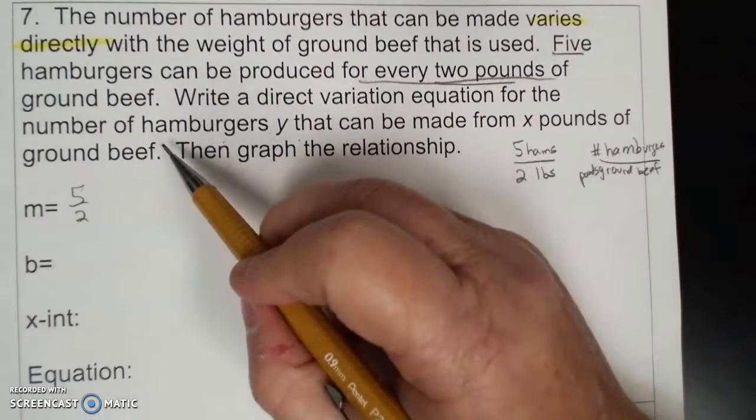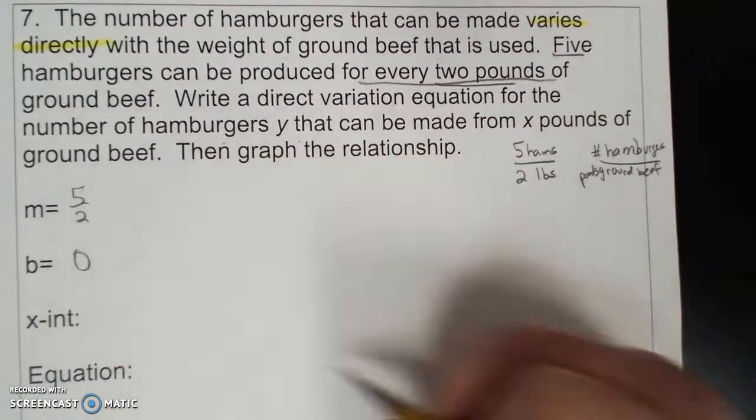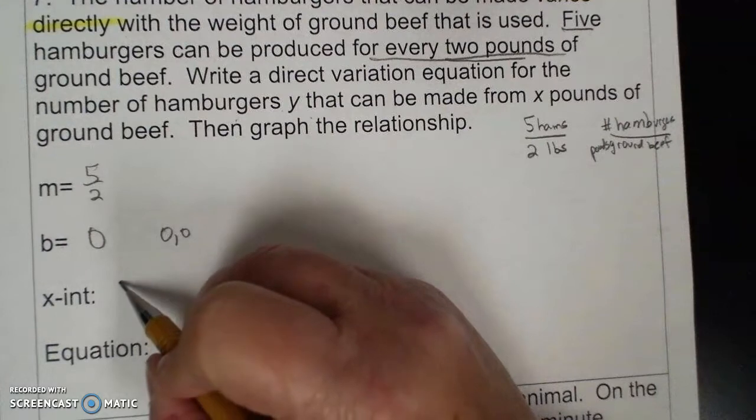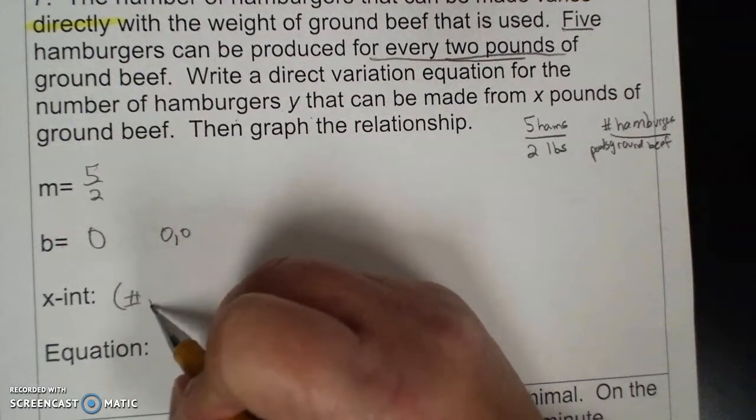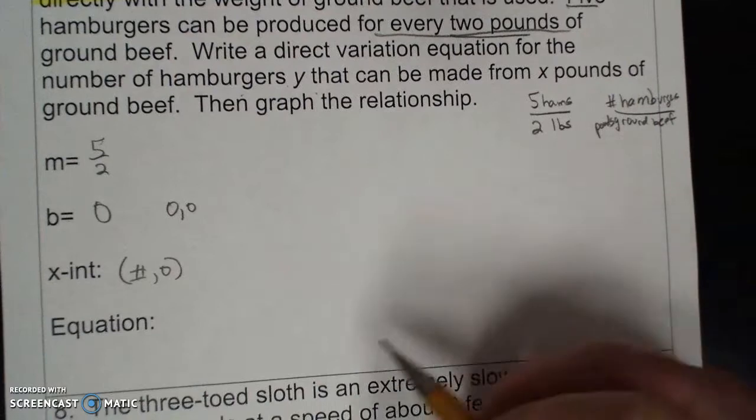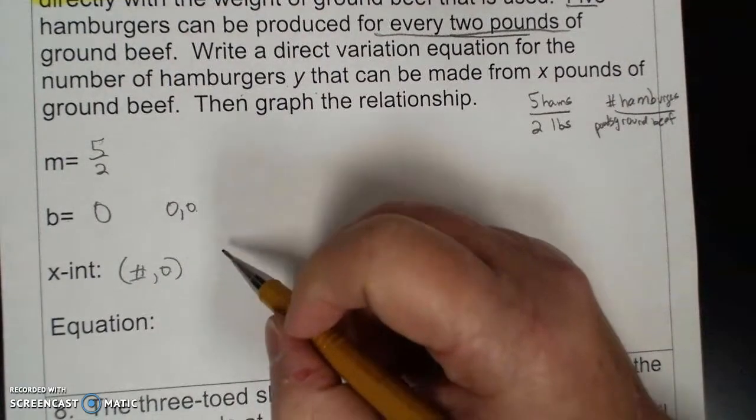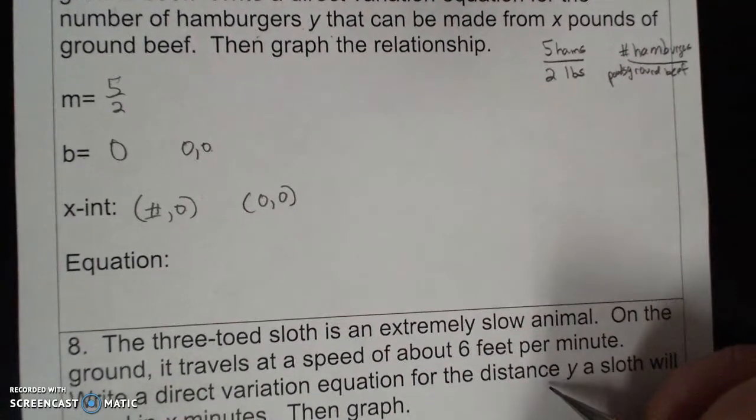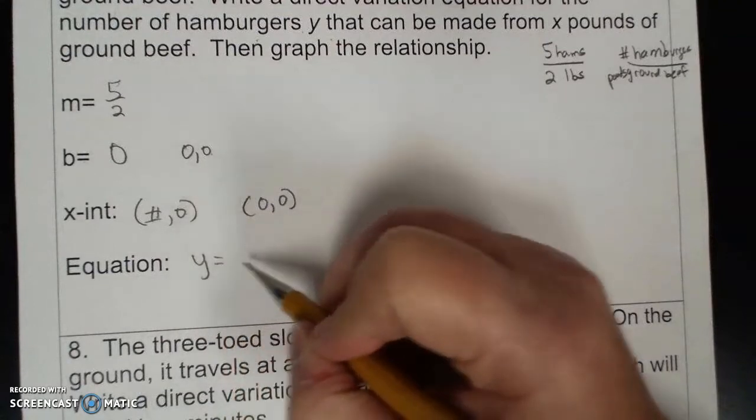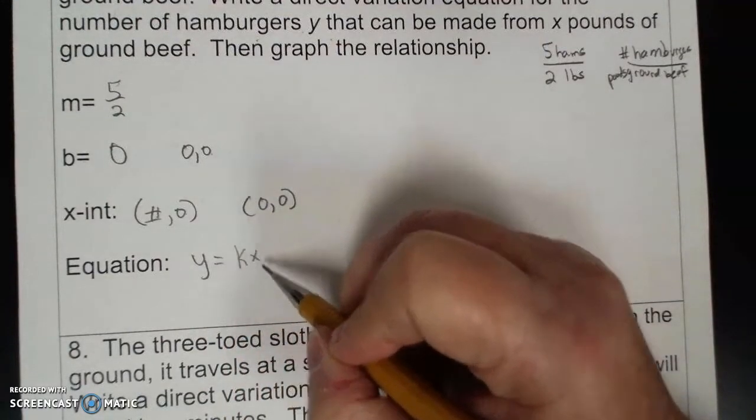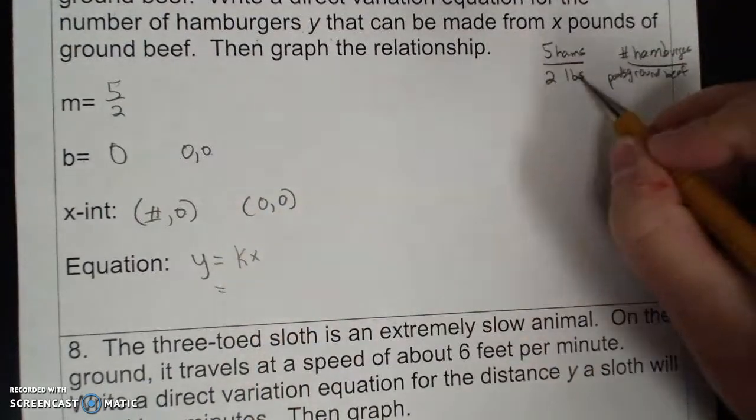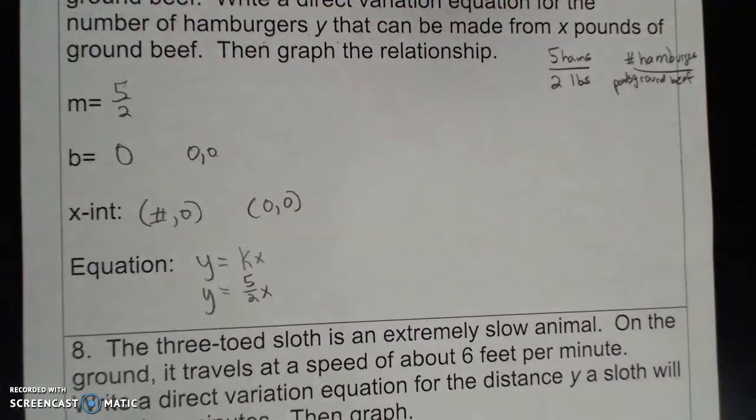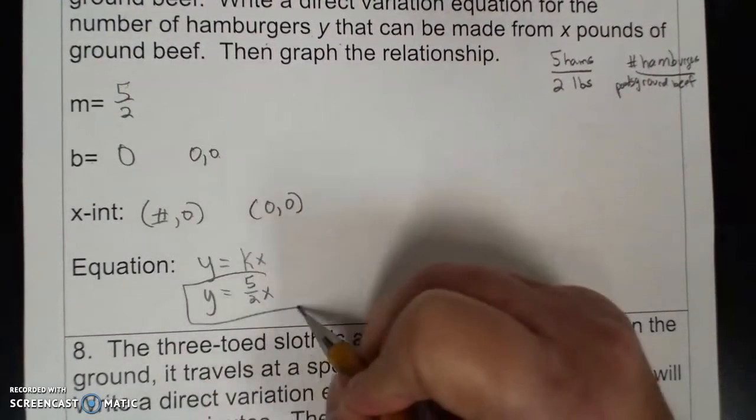Your y-intercept, because of the word varies directly, is 0. And that is (0,0). And all x-intercepts are a number, 0. In this case, if that's 0, that's 0. So your x-intercept is also (0,0). And your equation, because it varies directly, is y = kx. I don't know why they use k, but that's the slope, which is 5 over 2x. And so this is your final answer for that problem.